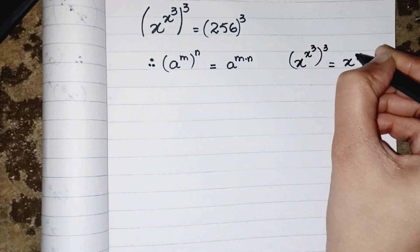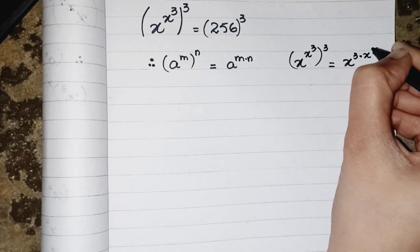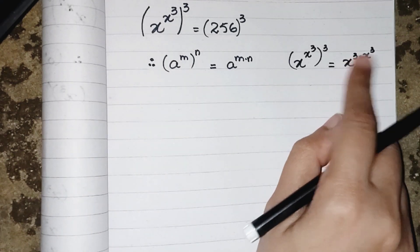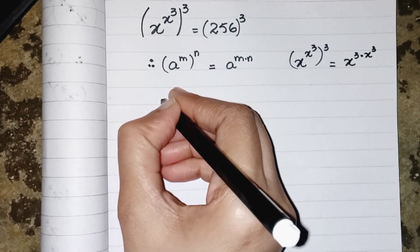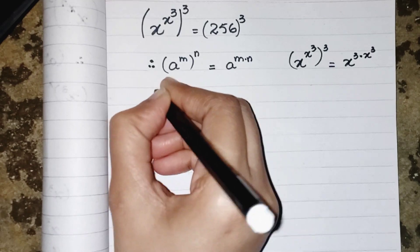Which means this 3 and x will be multiplied to each other, so we can write it like x power 3x. So x power 3x equals to, in place of 256, we can write 2 to the power 8, over power 3.